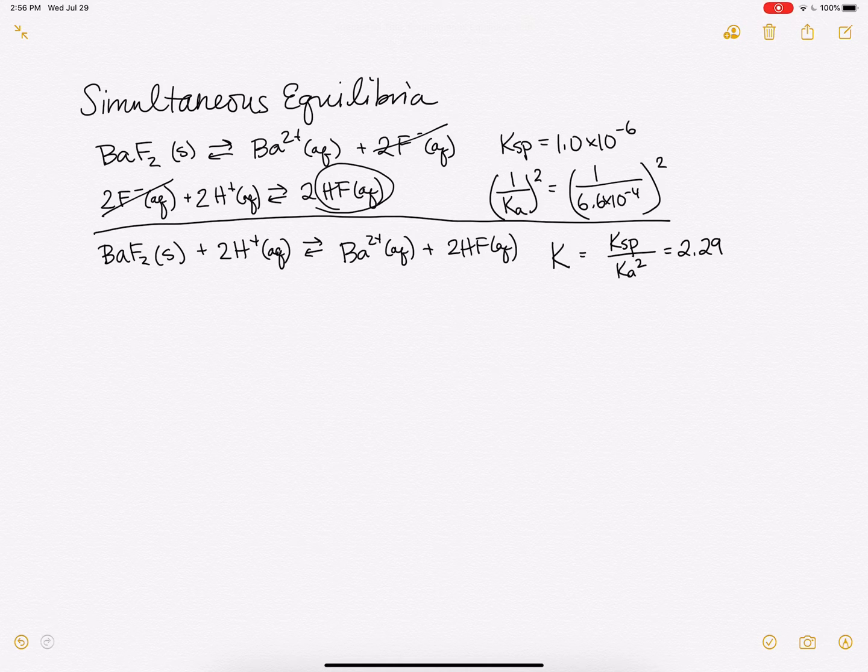And in a sense, if you think about just the top reaction here, it's like removing our fluoride ions. And if we remove the product, we expect the equilibrium to drive to the right. And that's exactly what we're seeing here, where our K value now for the overall reaction is much larger.